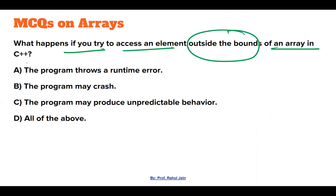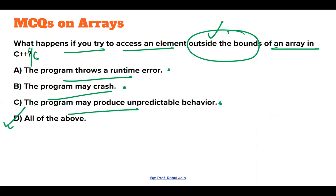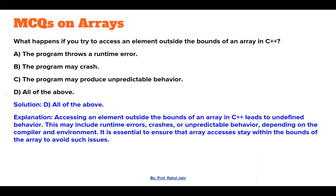The next question asks what happens if you try to access an element outside the bounds of an array in C or C++. The program may throw a runtime error, the program may crash, or the program may produce unpredictable behavior — all are possible. That is why option D, which covers all these scenarios, is the correct answer.